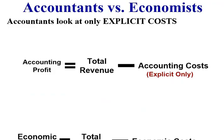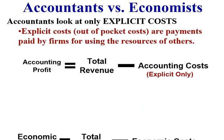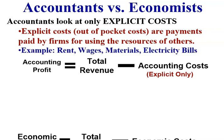Accountants look at only explicit costs — so out-of-pocket or actual cash payments paid by firms for using the resources of others. Examples are rent, wages, materials, and electric or utility bills.